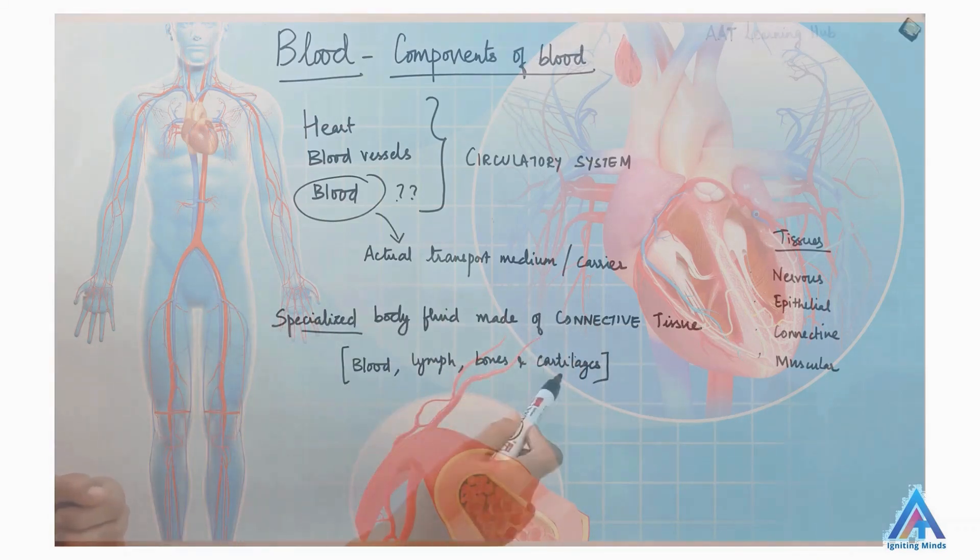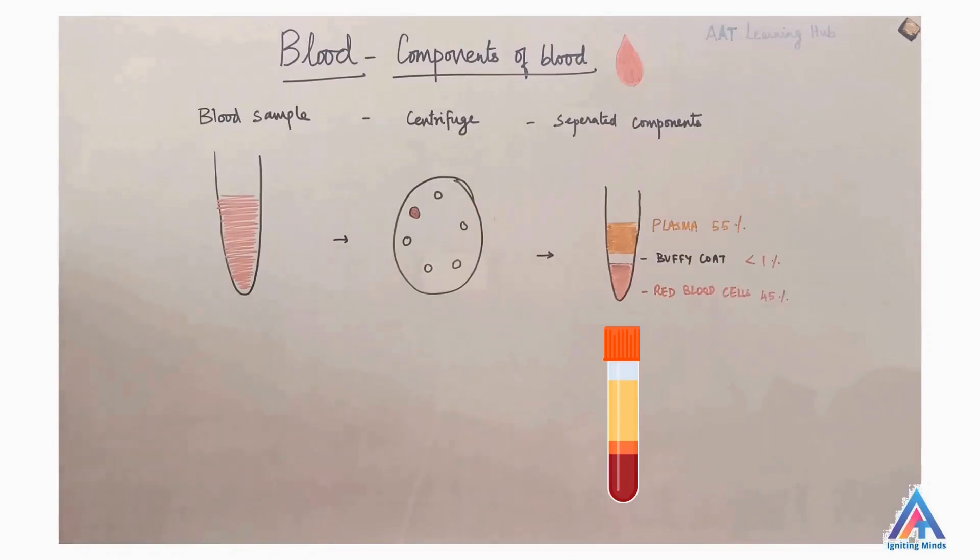Other than blood, bones, cartilage and limbs are also made of connective tissues. So what are the components of blood? Let's take a blood sample, put it in the centrifuge machine and allow it to spin. The force with which it spins helps separate the components in blood according to the weight and size.